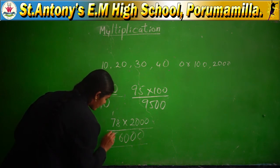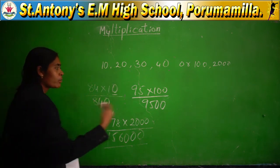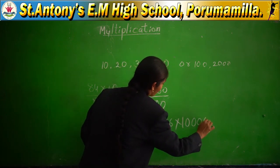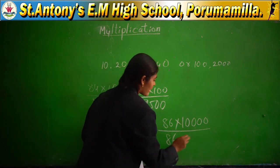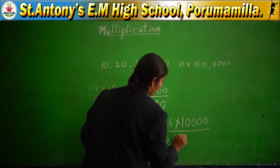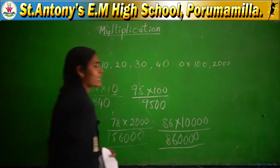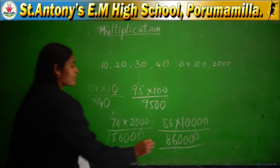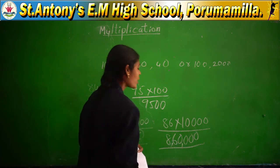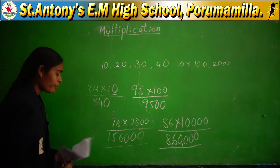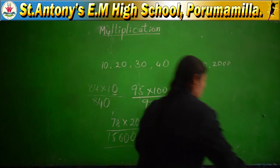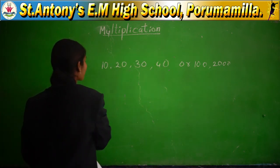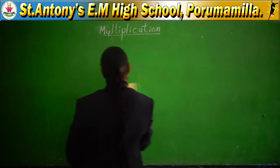Don't forget the zeros — without them it is not a correct answer. One more example: 86 into 10,000. 86 ones are 86. In the multiplier there are four zeros: add four zeros to the right of the product. You will get 8,60,000. This method also works for multipliers like 200, 500, 600, and similar numbers.